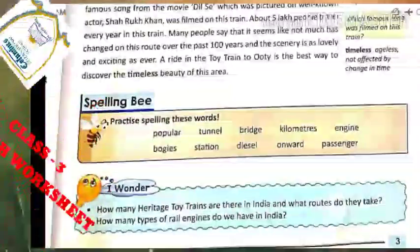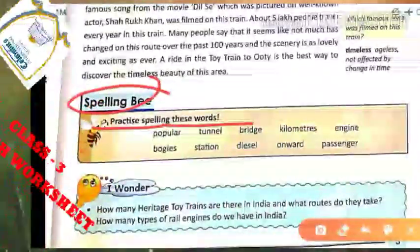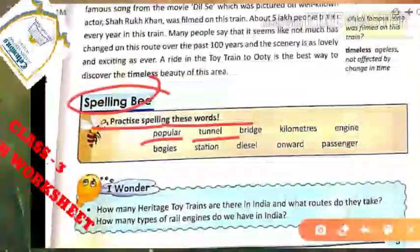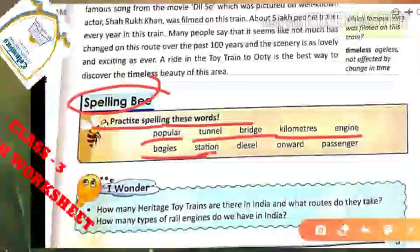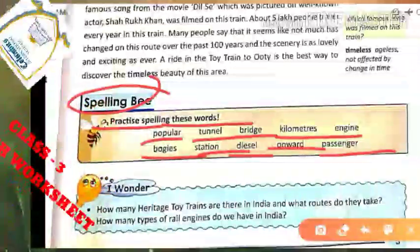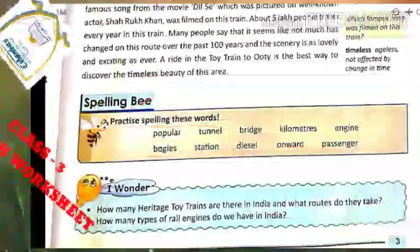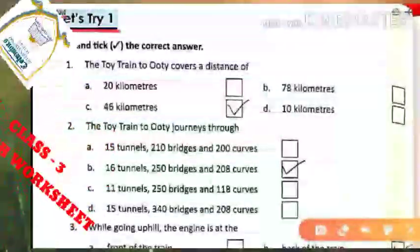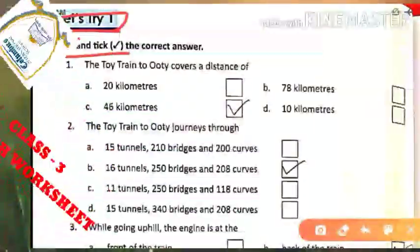Next we have spelling practice. Spell these words from the story: popular, tunnel, breezes, kilometers, engine, boggy, station, diesel, onward, and passenger. Aapko inhein loud voice mein read karna hai with spelling, aur inhein learn bhi karenge. Then we will move to page number 4 for the MCQ exercises. Next day I will share question answers with you.